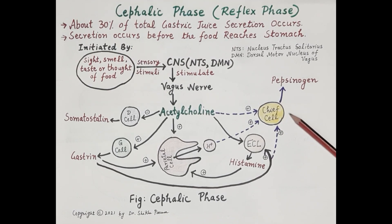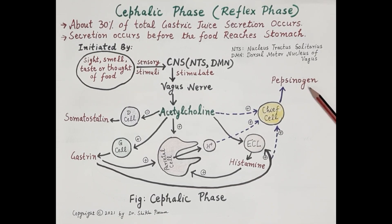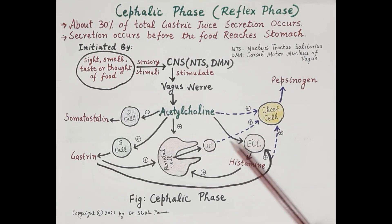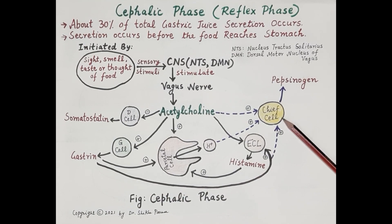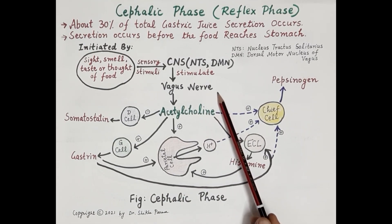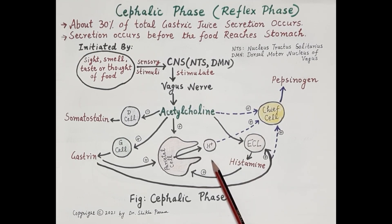Apart from this, acetylcholine also stimulates the chief cells. Stimulation of chief cells releases pepsinogen; activated pepsinogen is termed pepsin, which is a proteolytic enzyme present in the gastric juice. Chief cells are also stimulated by gastric acidity and by gastrin. This is how stimulation of the vagus nerve causes release of gastric juice during the cephalic phase.